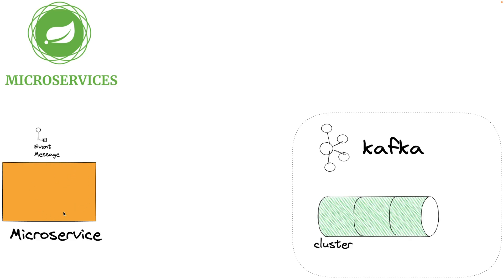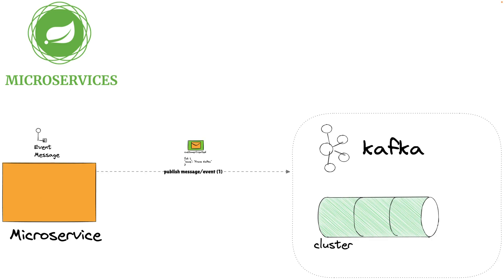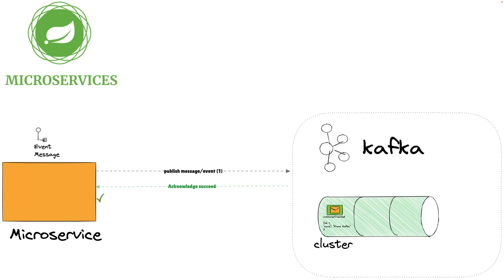Let's suppose we have a microservice — a producer microservice — that produces some events to an Apache Kafka topic. The event is 'customer created' and it has some metadata: the payload contains an id and a name. The Kafka broker will receive the message, write it to the topic, and then send the acknowledgment back to the producer. This is the happy path.